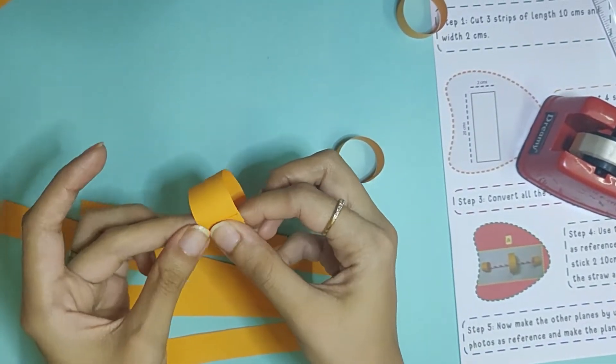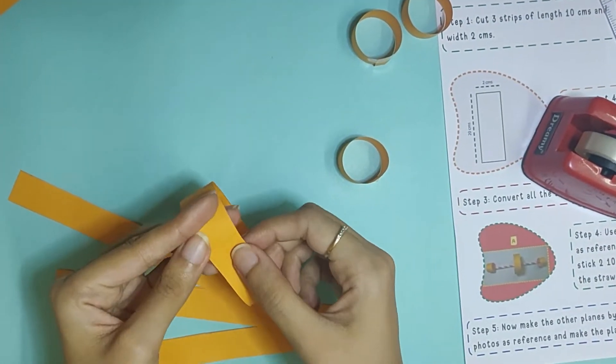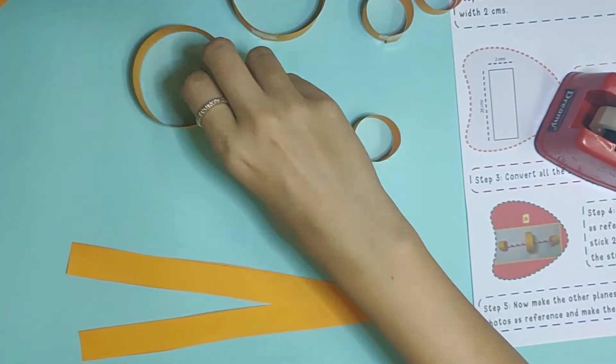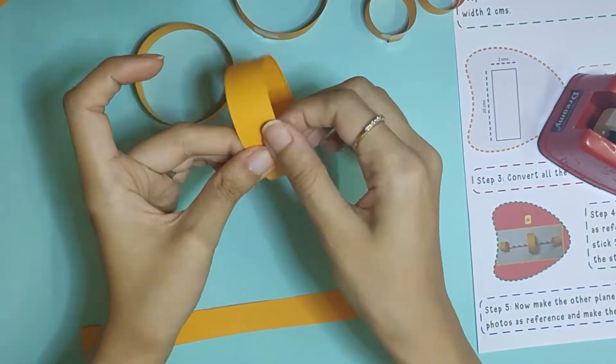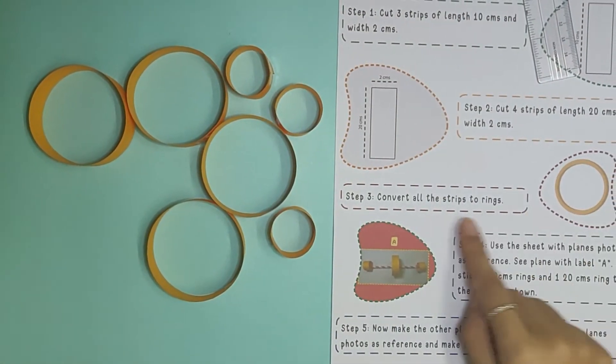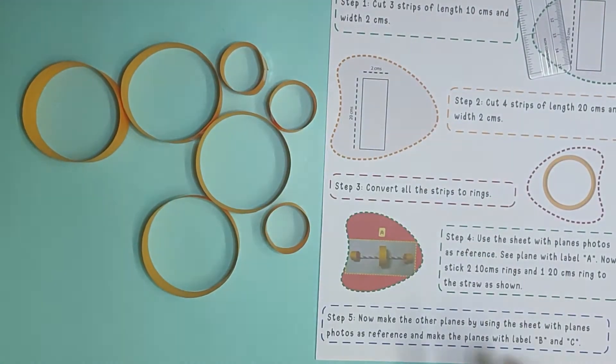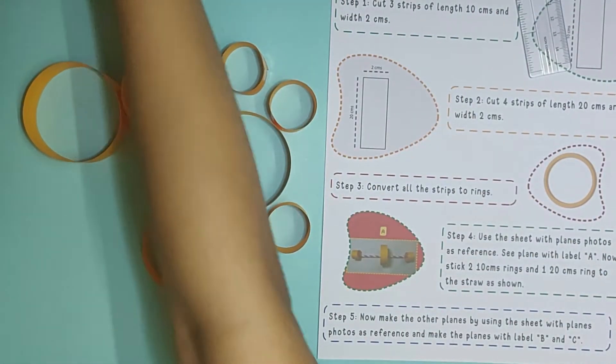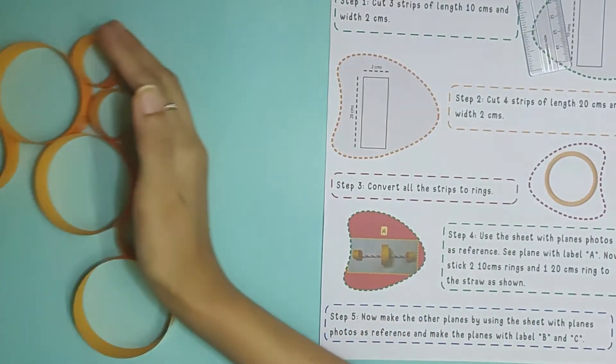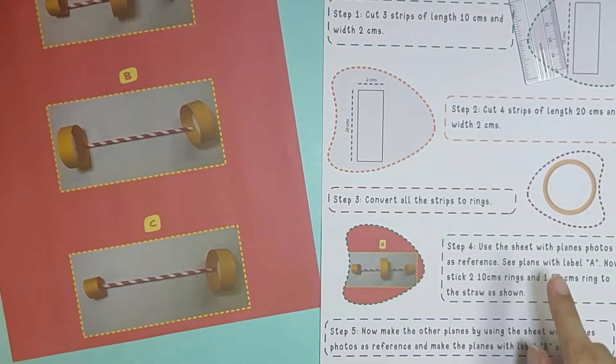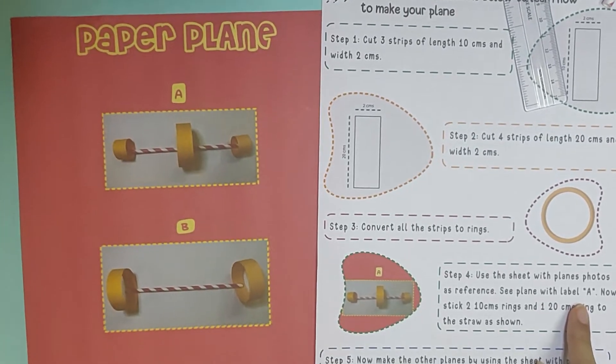Now that your strips are ready, let's go to step 3: convert all the strips to rings. What we're going to do is take each one of them, turn it into a circle and put a cello tape here. Just like that, so that's your one ring. You will do that for the rest.